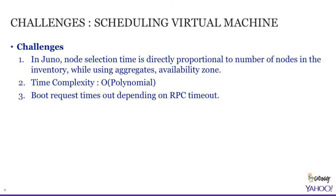Specifically in Juno, node selection time is directly proportional to the number of nodes in inventory — the time complexity is polynomial. With 1000 nodes it takes about 20 seconds; with 10,000 nodes it takes about 50 seconds; with even more it takes 100 seconds. Time keeps growing as you add more nodes to inventory. As a result, the boot request might time out — the RPC timeout is around 180 seconds — so this is not acceptable.